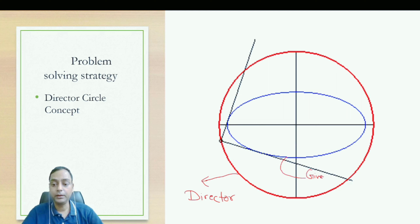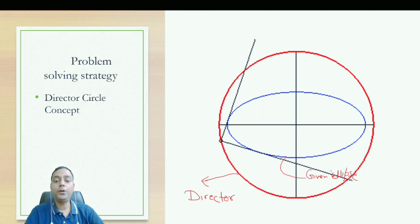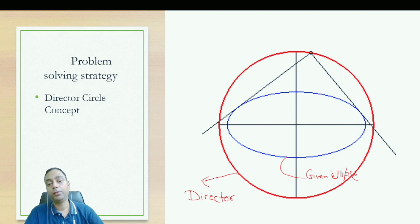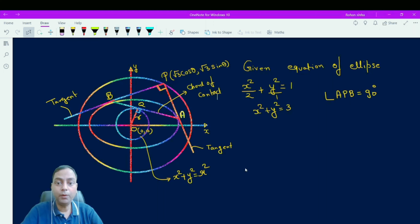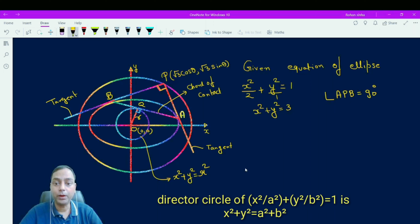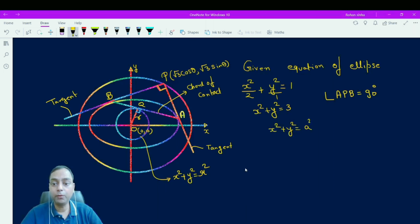This is our given ellipse. I am going to apply the director circle concept to this problem. The given equation of ellipse is x²/2 + y²/1 = 1. The equation of the director circle is x² + y² = a² + b². Here, a² = 2 and b² = 1, so a² + b² = 3. Therefore, the equation of the director circle is x² + y² = 3.